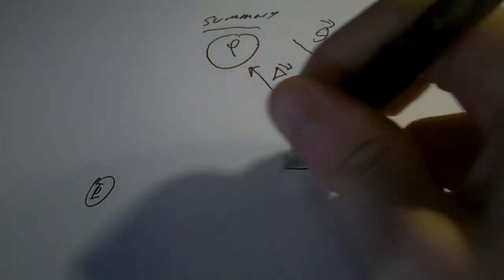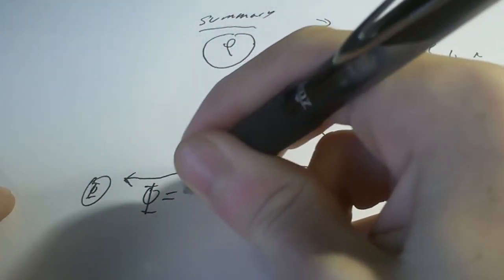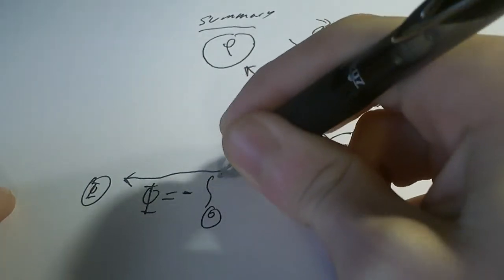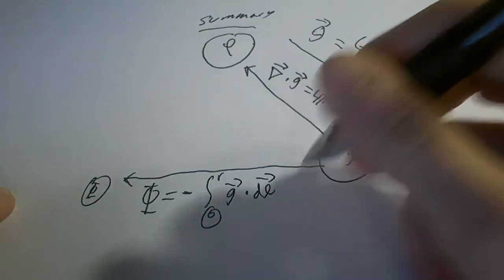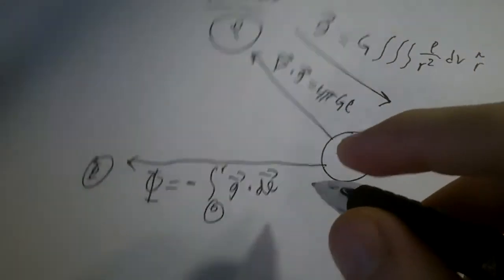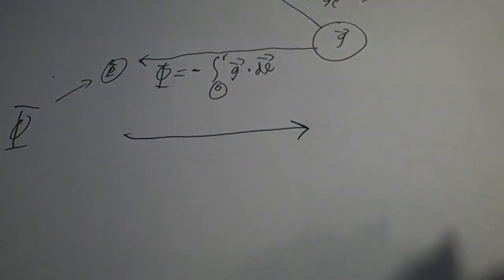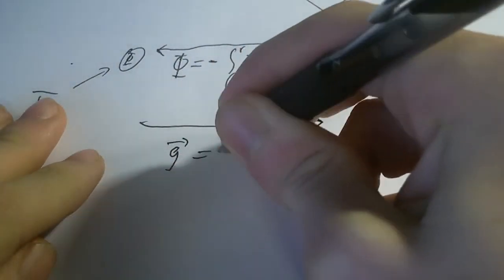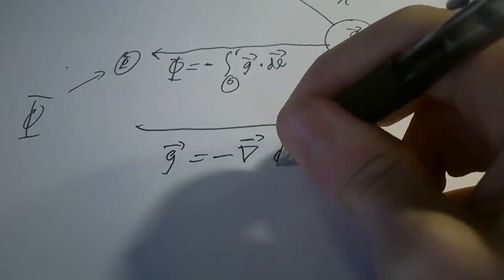If we have the gravitational field, how do we get to the scalar field phi? Well, phi is just minus the integral from the source point to the distance r of g·dl — the displacement vector. And if we have phi, how do we get to g? That's very simple: it's just minus the gradient of the scalar field phi.